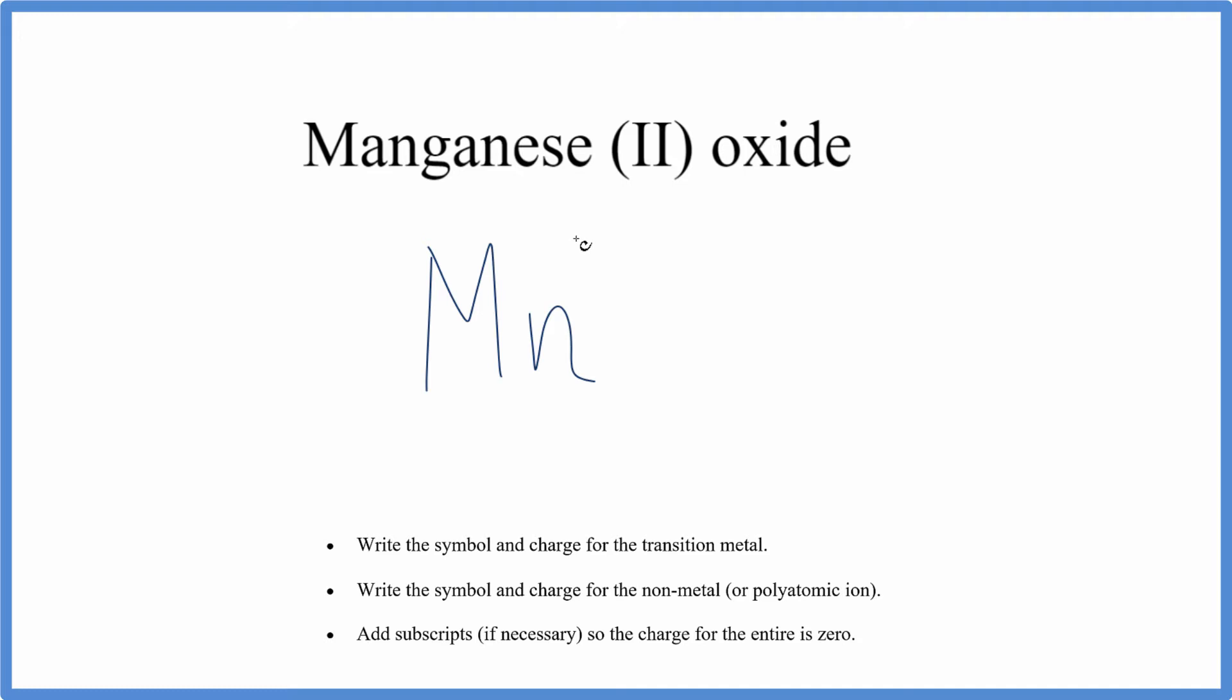And this 2 tells us the charge, that manganese has a plus 2 charge in this instance. For these transition metals, they can have different oxidation states or ionic charges, so the 2 tells us it's plus 2.